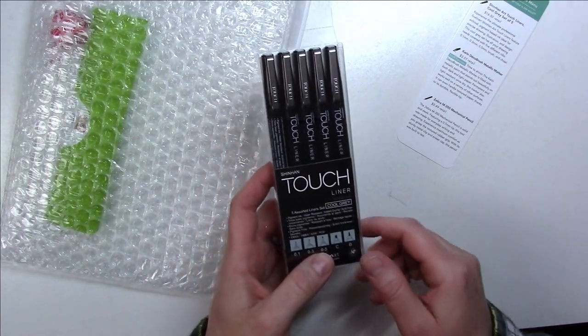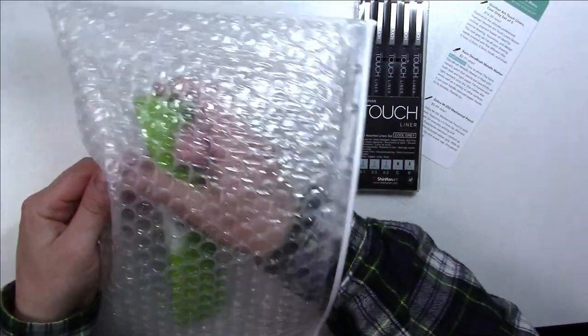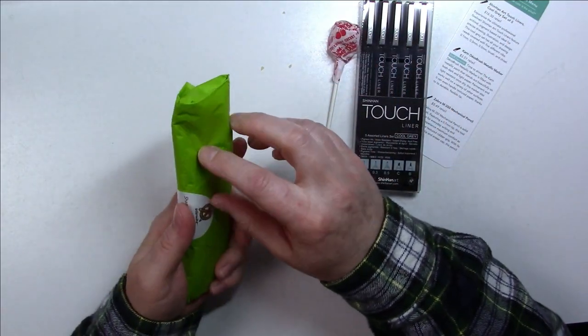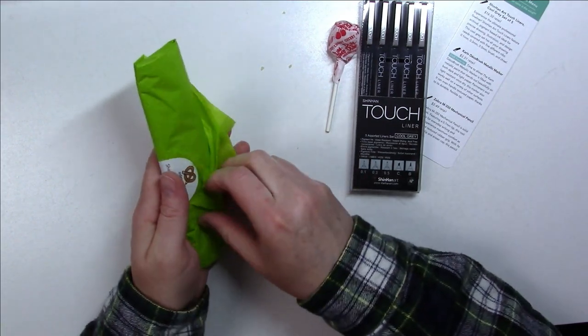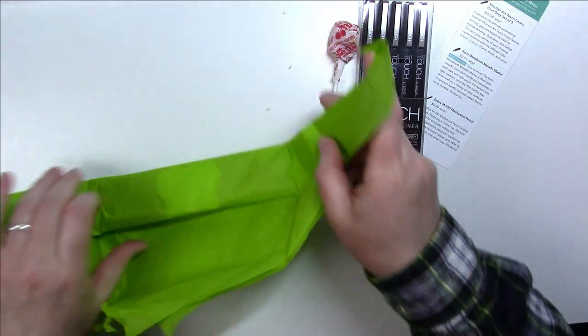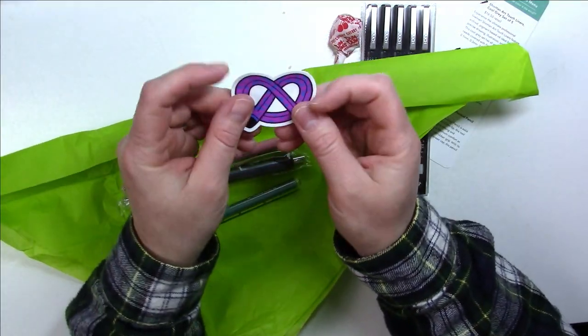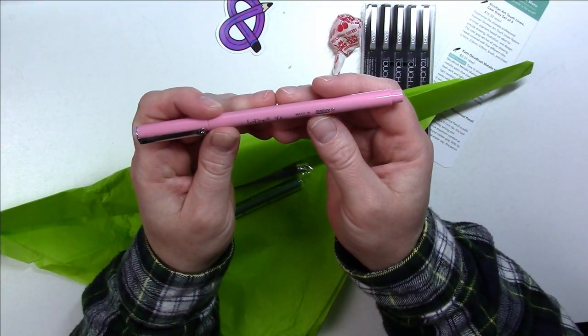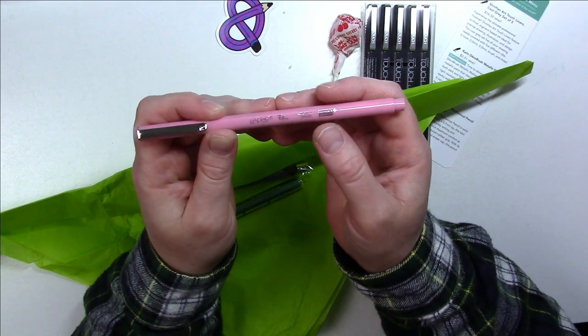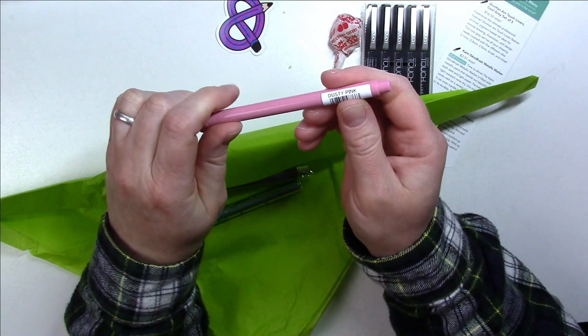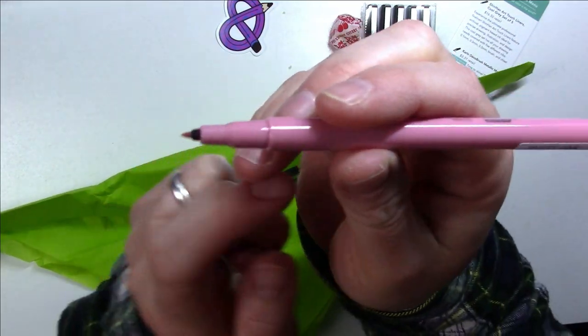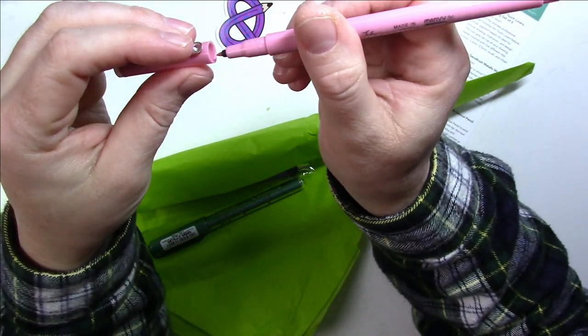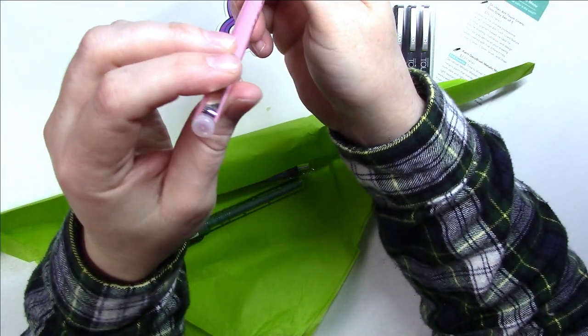And this is part of the regular Art Snacks Plus Box along with a lollipop, a pretty sticker, a Marvy Le Pen Flex - looks like it's in pink, dusty pink. Oh my gosh, it's so tiny.